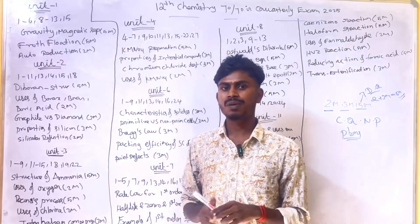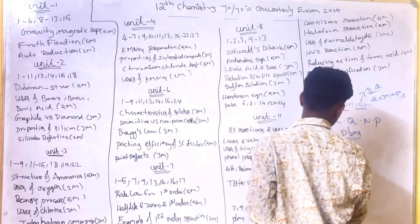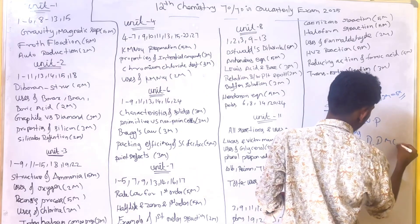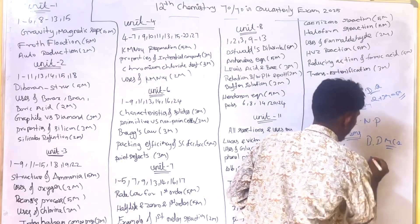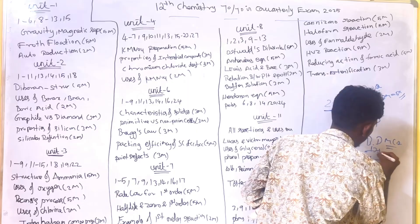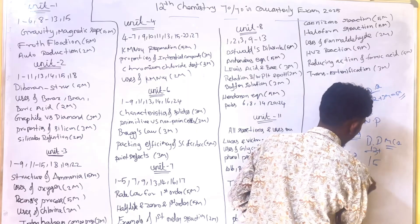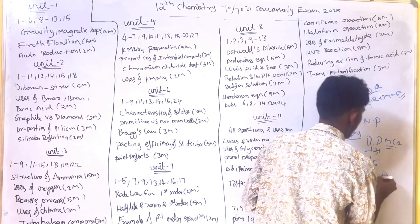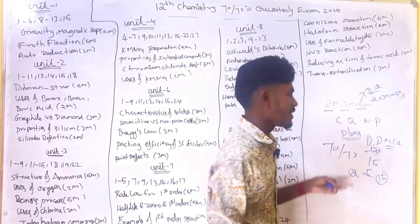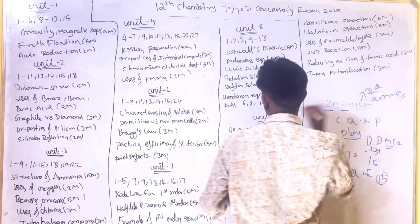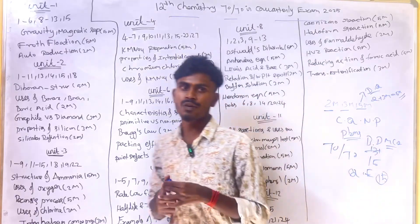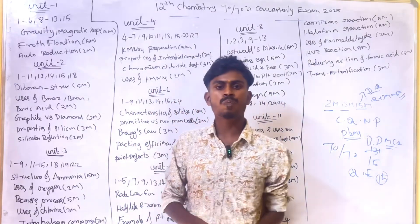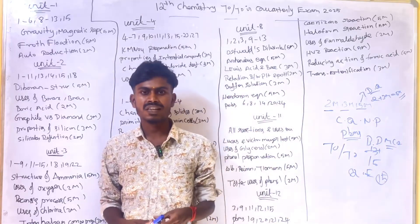So if you're aiming for 70 out of 70, prepare all MCQ questions. In the 15 MCQ marks, probably 13 or more questions come from the book back. This is a quarterly exam, so if you look at the book back, you can score 15 out of 15. Prepare 2 mark, 3 mark, and 5 mark questions. Like the video and subscribe to the channel — I will upload more videos.